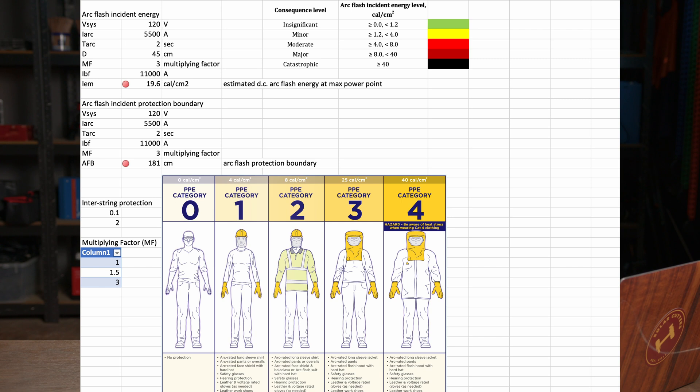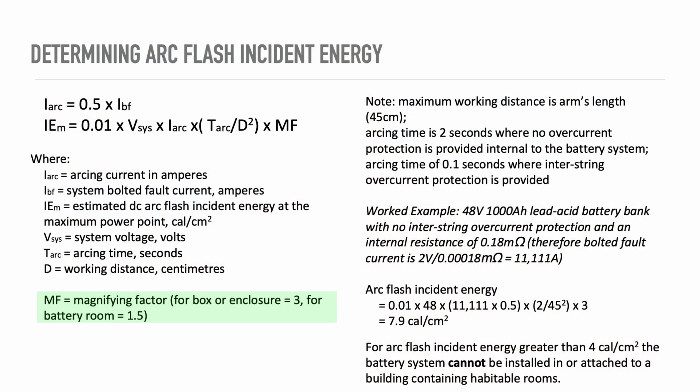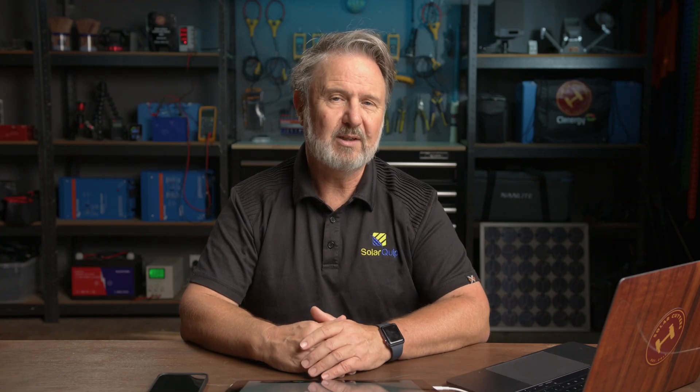I've got a spreadsheet here that puts the formulas from the standard into a spreadsheet. You change only the variables: battery system voltage, bolted fault current, arcing time, and the multiplying factor. The multiplying factor accounts for enclosing an arc within a confined space, which multiplies its intensity. In open air the multiplying factor is 1; in a room it's 1.5; and within an enclosure — such as opening the doors to a battery system — it's 3. It's really important to get that right.